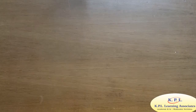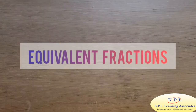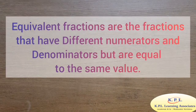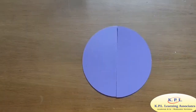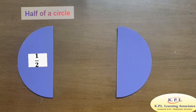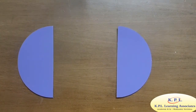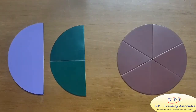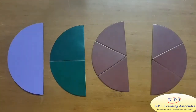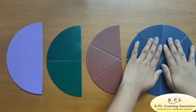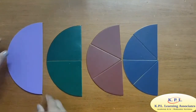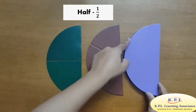With the help of this kit, we can also learn equivalent fractions. This is half of a circle. We can represent halves in more than one way. If I take two pieces of one fourth, three pieces of one sixth, and four pieces of one eighth, we get halves. We observe that all are halves.